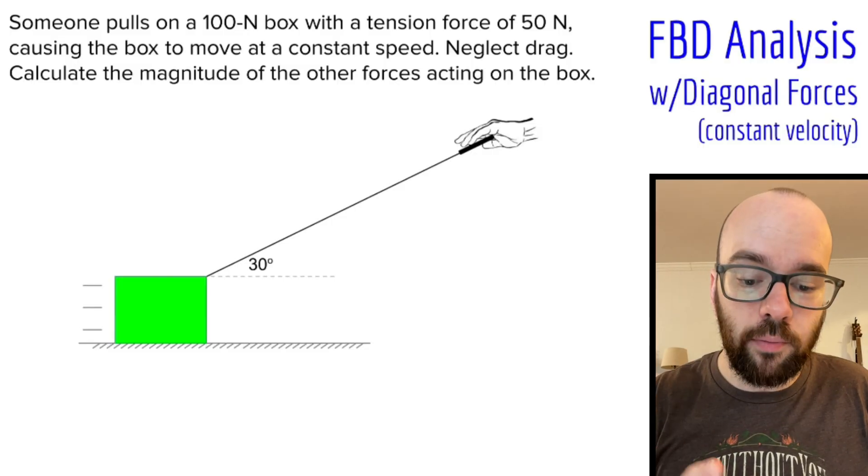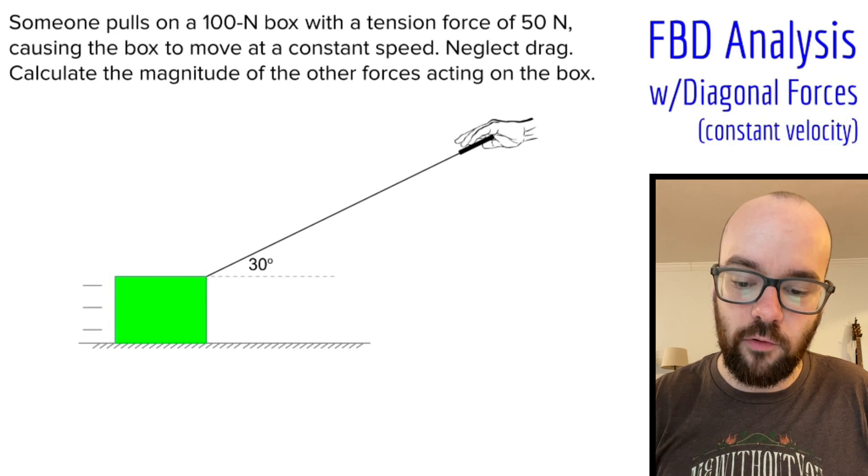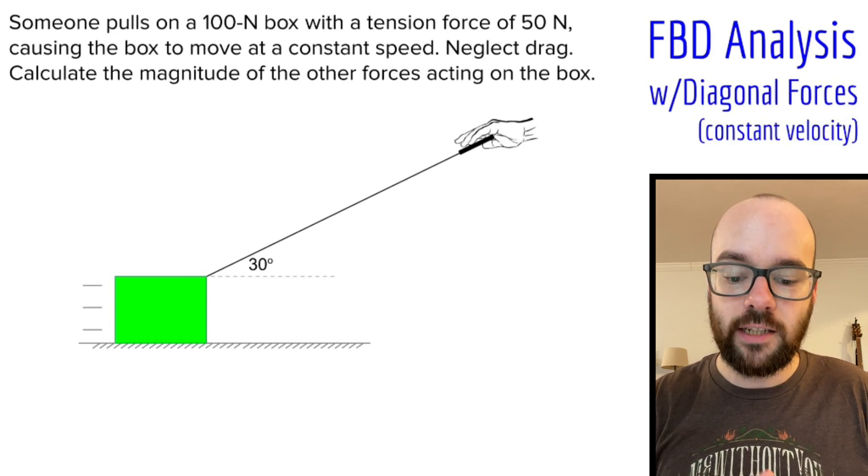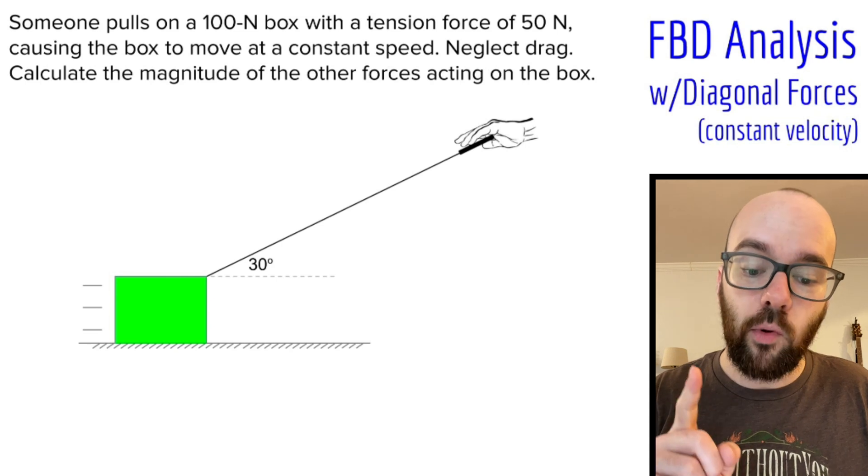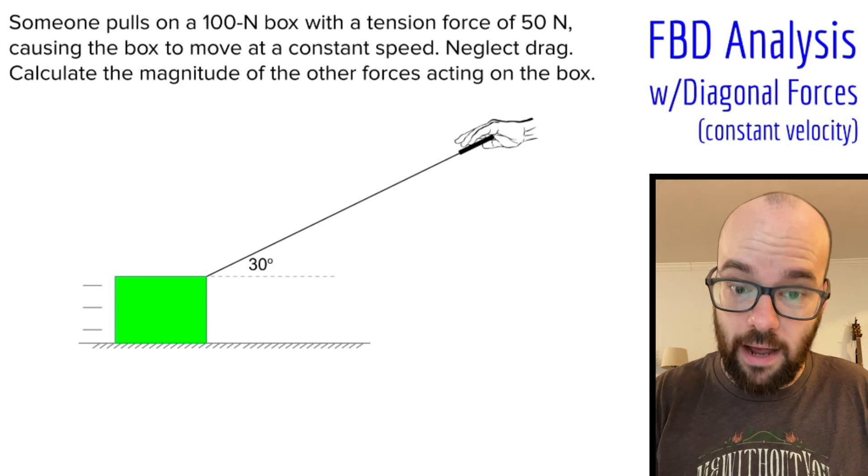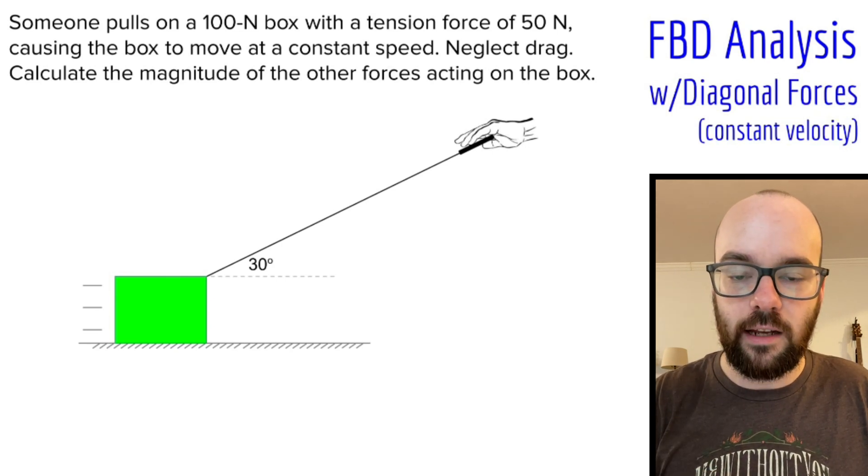So the problem says someone pulls on a 100-newton box with a tension force of 50 newtons, causing the box to move at a constant speed. We're going to neglect drag, and we're going to calculate the magnitude of the other forces acting on the box.